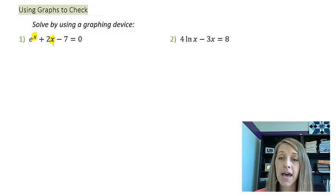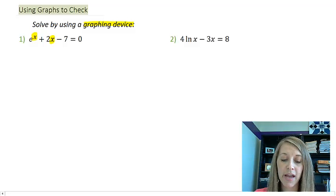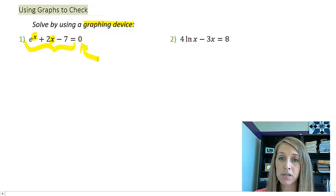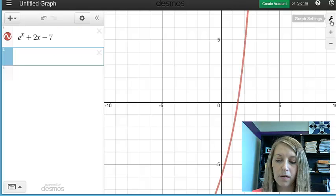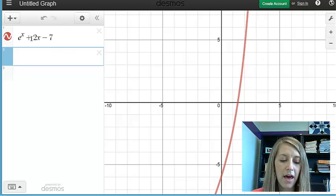So the only way to actually solve equations like this is by using that graphing device that we've talked about before. We are going to let this be one side of the equation, we're going to let this be the other side of the equation, and then we're going to see where they intersect. Let me do this by using my Desmos app. I think it's a little bit more user friendly. So you see here, I have the left-hand side of my equation plugged in, e to the x plus 2x minus 7.